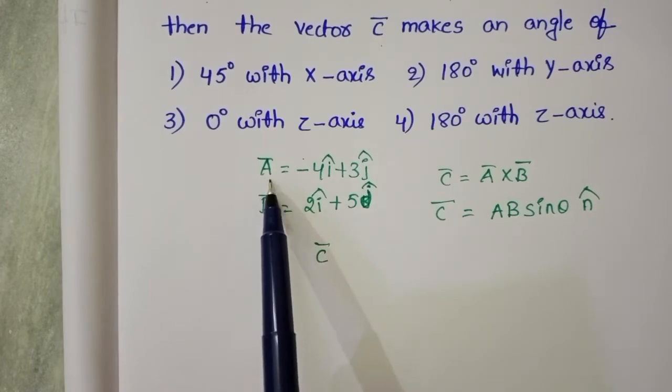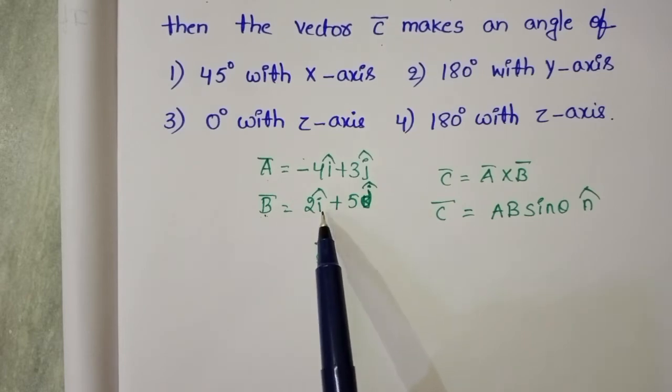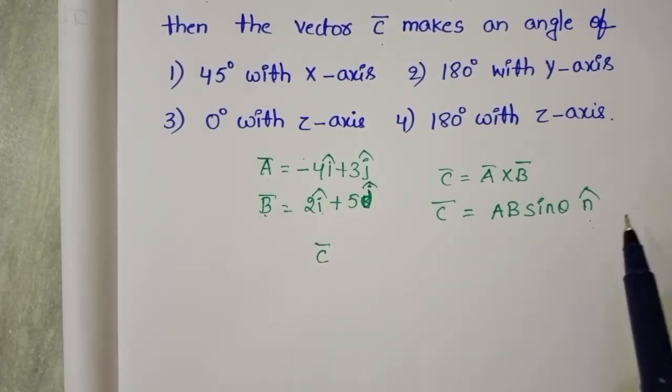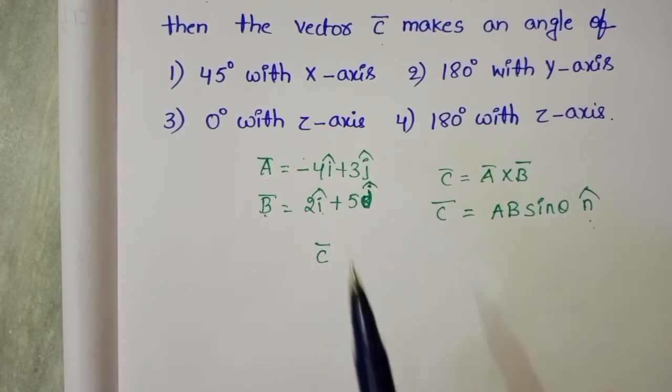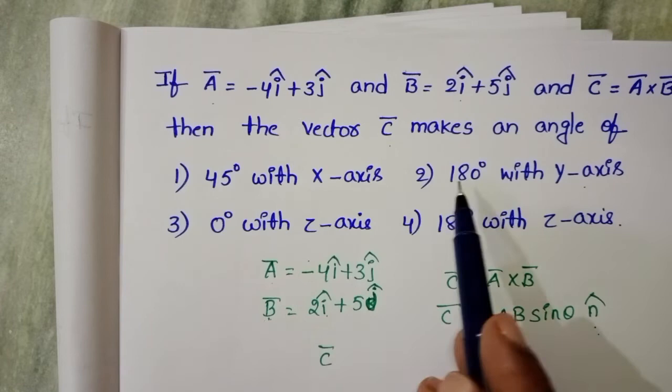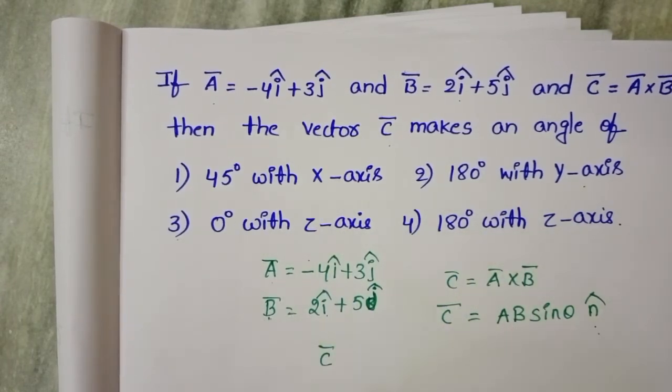A̅ is a vector in the xy plane, and B̅ is also a vector in the xy plane. So n̂ is a unit vector perpendicular to the xy plane. Therefore, the first option and second option are not correct. Our answer is either the third option or fourth option.